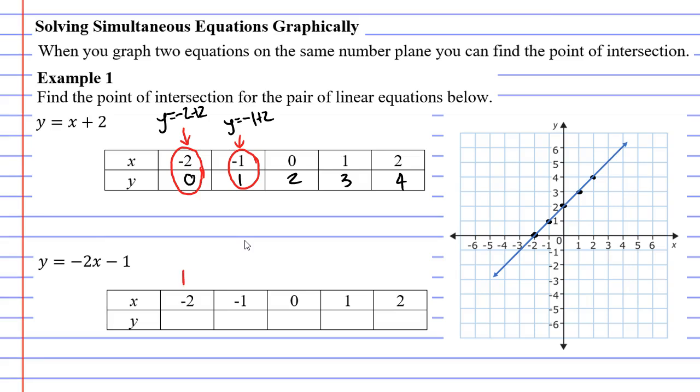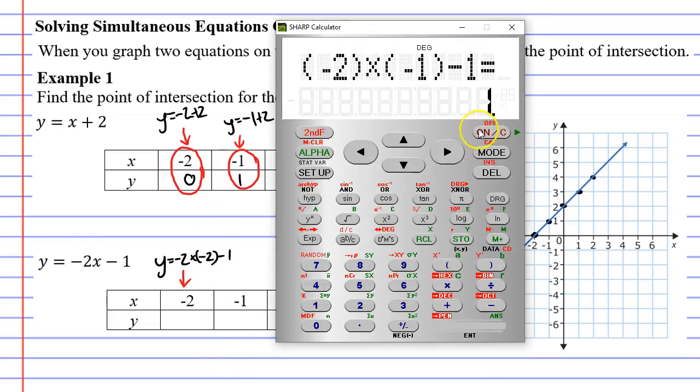Let's substitute x equals negative two from the first column into this. We will get y equals negative two times negative two minus one. And if we work it out in the calculator, negative two times negative two minus one gives us three.